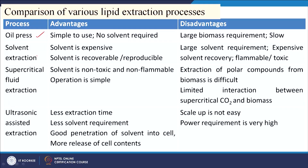Comparing extraction processes: the oil press is simple and requires no solvent, but has large biomass requirements and slow, incomplete recovery. Solvent extraction uses solvents like hexane or n-heptane — expensive but recoverable and reusable — though large solvent volumes are needed and recovery is costly; solvents are also flammable and toxic. Supercritical fluid extraction uses non-toxic, non-flammable CO2 as solvent, but extraction of polar compounds is difficult and interaction between supercritical CO2 and biomass is limited.